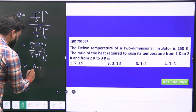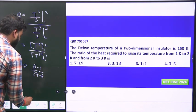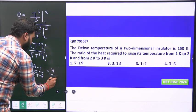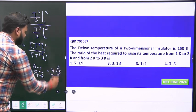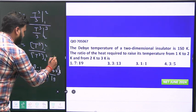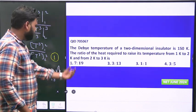The answer is 7 by 19. Option number A1 is correct. 7/19 is the ratio; this is the final answer.